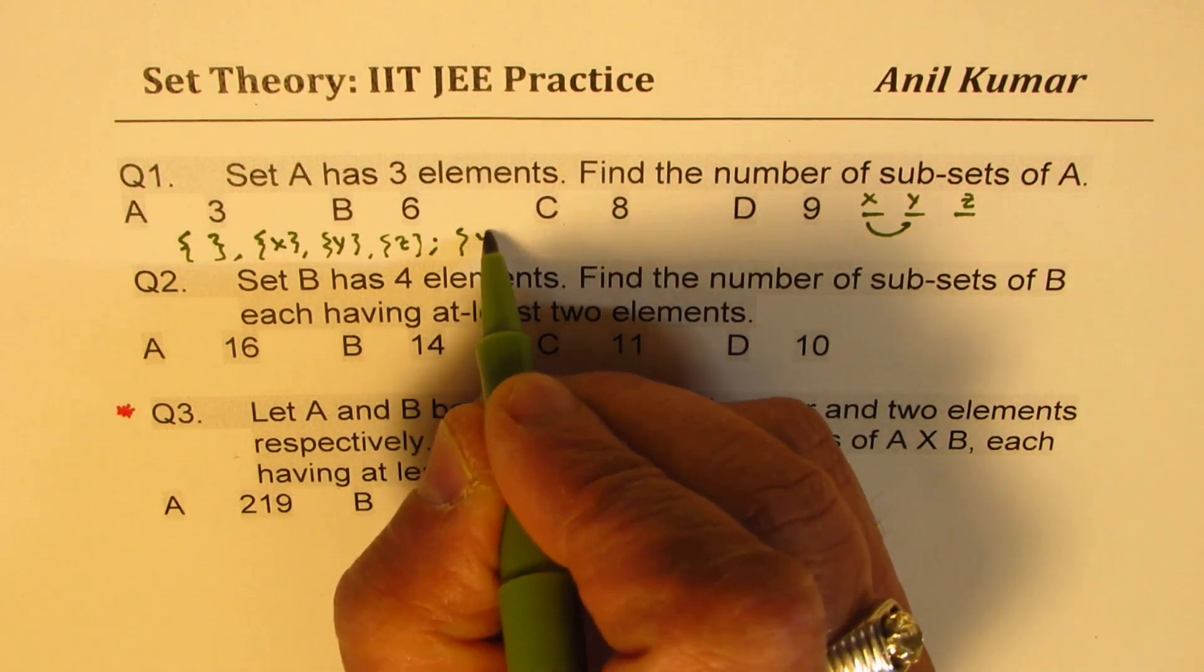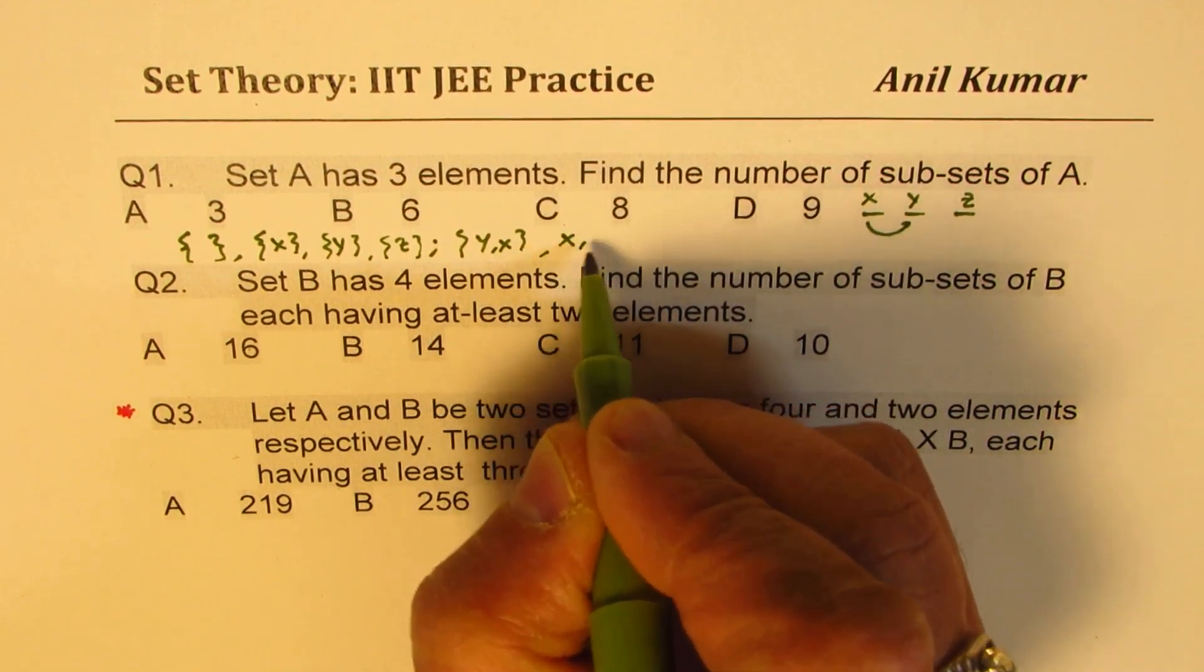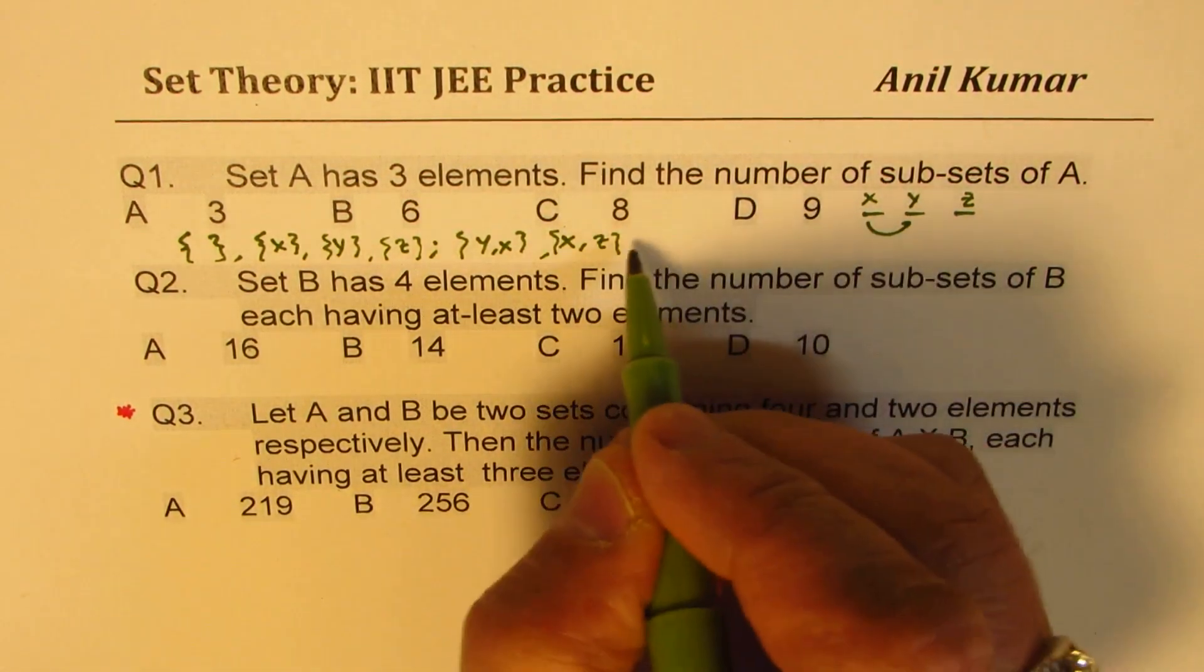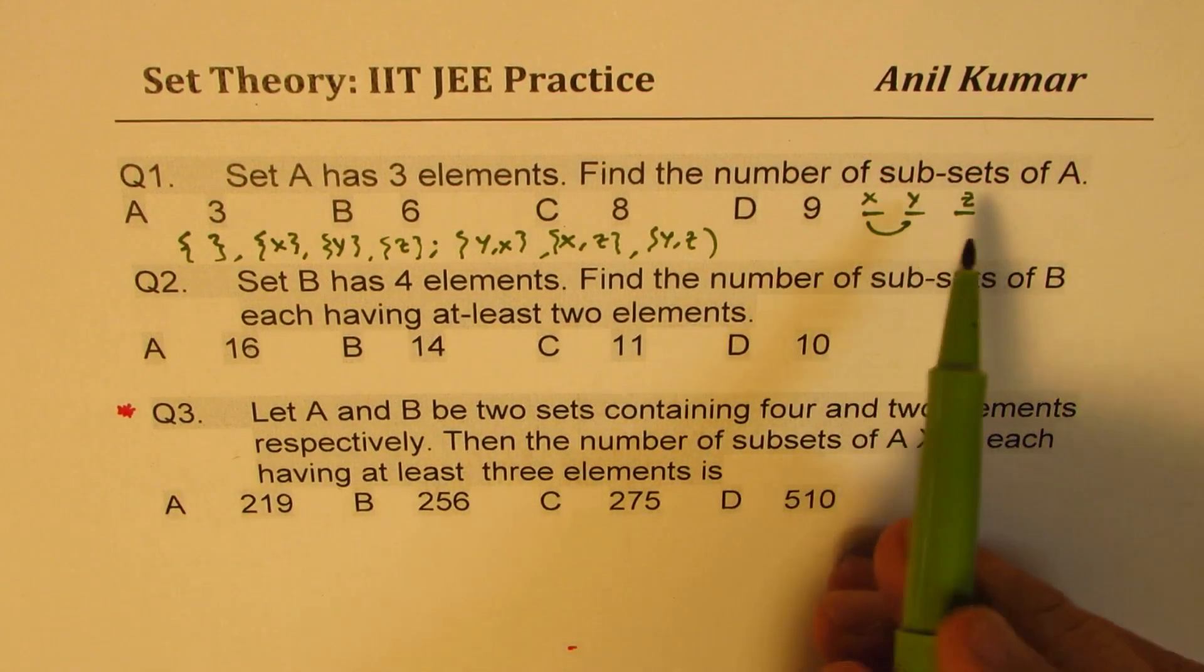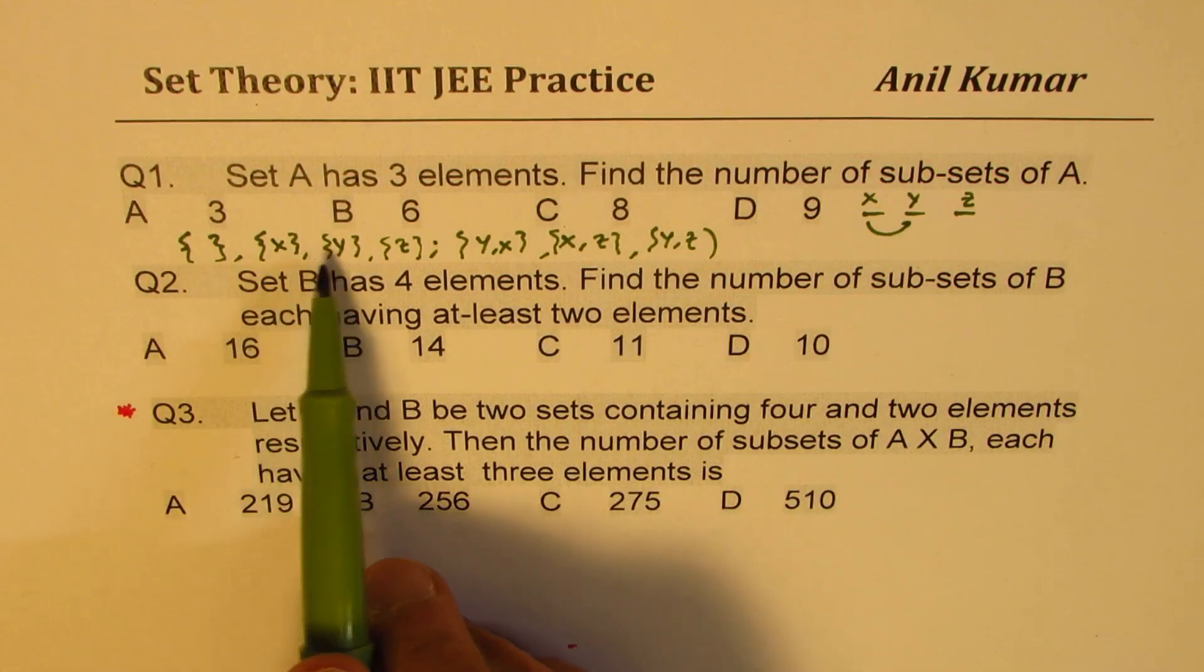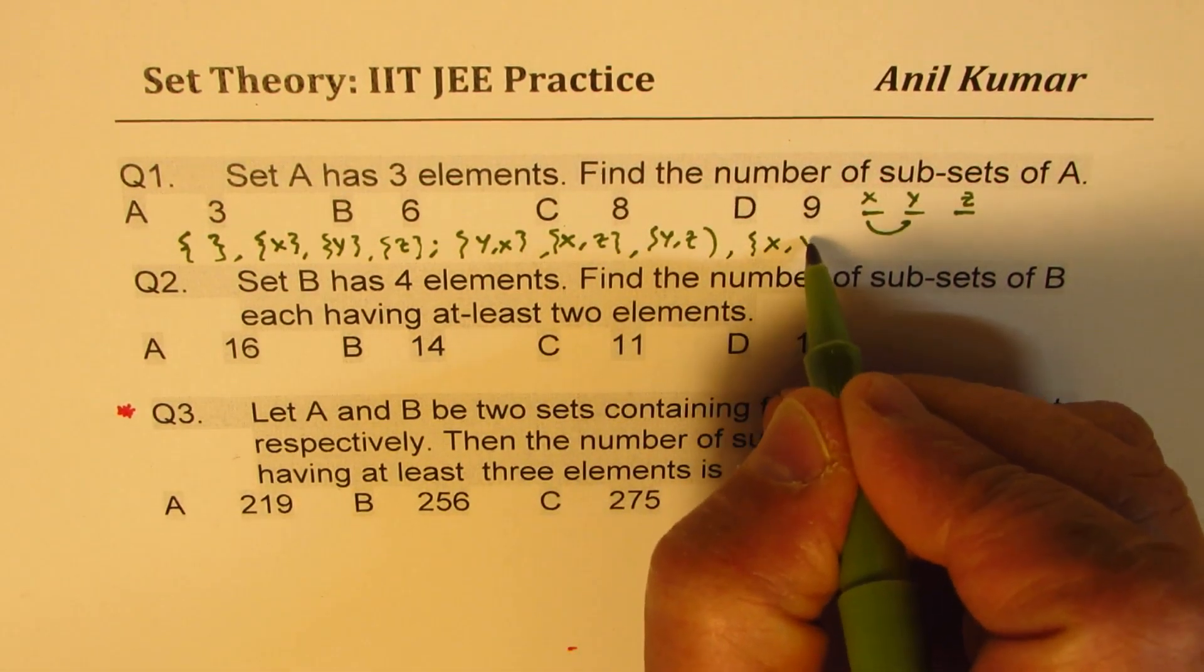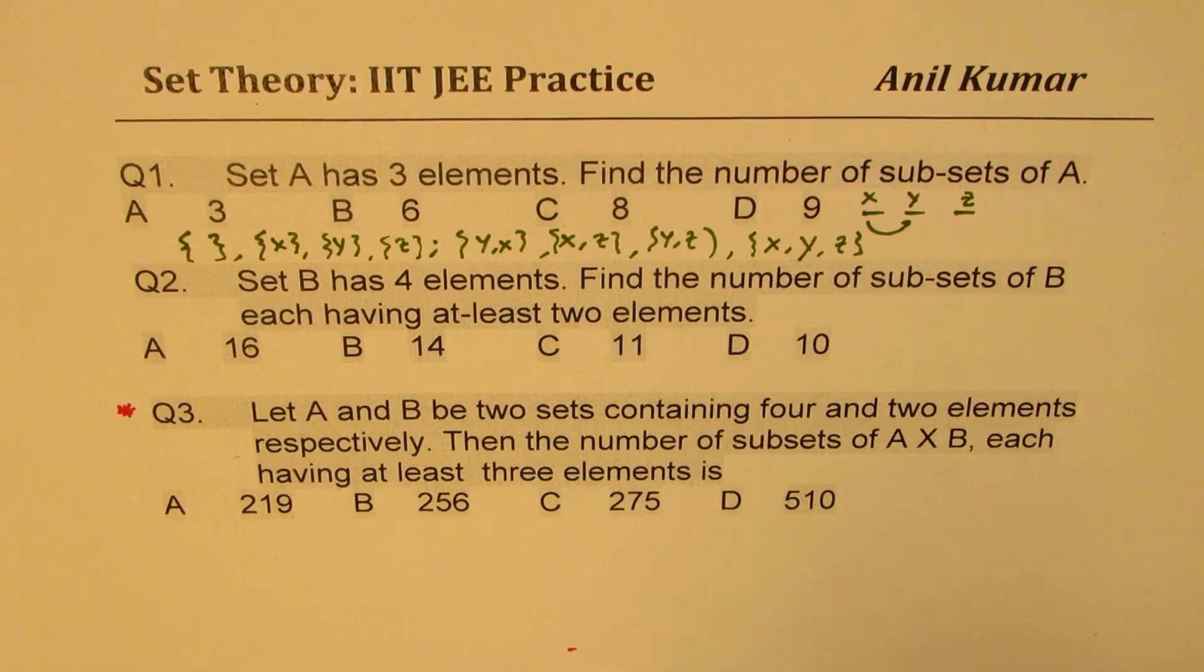So it could be X and Y, it could be X and Z, it could be Y and Z. So those could be the combinations when we take two at a time. So we get 1, 2, 3, 4, 5, 6, 7, and when of course we can take all three of them. So these are the combinations since order does not matter. So we definitely get the answer is 8.